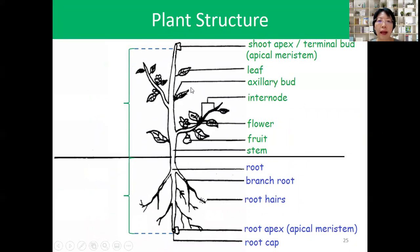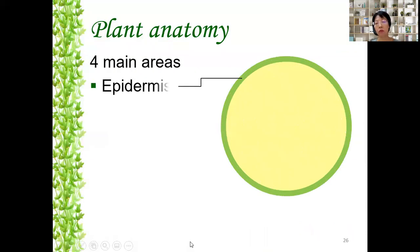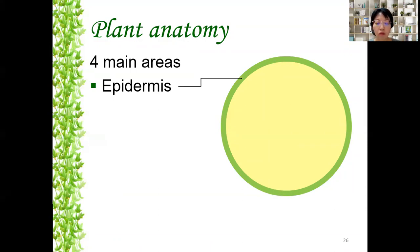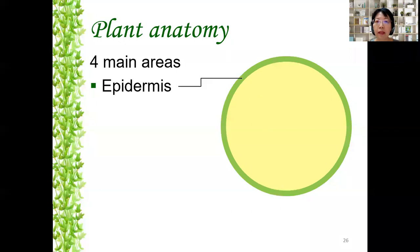This is a plant structure — the shoot system and root system. For plant anatomy, the basic plant body — the stem and the root — is made out of four main areas. The first layer is the epidermis. 'Epi' stands for 'upon' and 'dermis' means skin, so it's the layer of tissue surrounding the plant body. All stems, roots, and leaves will be covered by epidermis as the outer tissue layer.